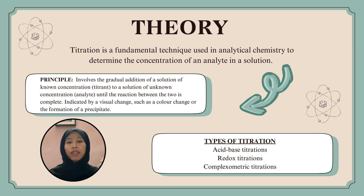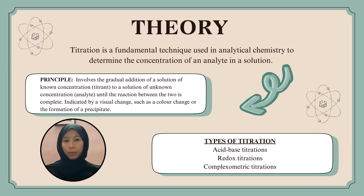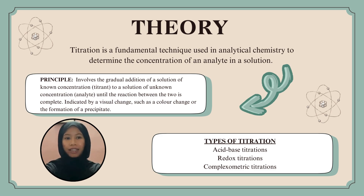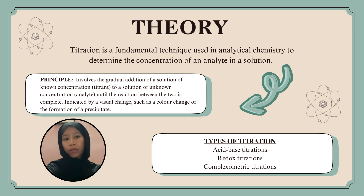Titration is a fundamental technique used in analytical chemistry to determine the concentration of an analyte in a solution. It involves the gradual addition of a solution of known concentration, which is the titrant, to a solution of unknown concentration, which is the analyte, until the reaction between the two is complete. The result is indicated by a visual change such as a color change or the formation of precipitates. The main types of titrations are acid-base titration, redox titration, and complexometric titration.